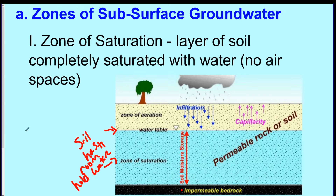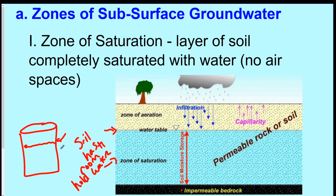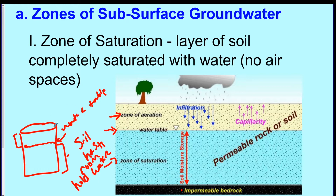Think of a glass of water — the line you fill the water up to in your glass would be considered the water table. The area that has the water is called the zone of saturation, and the area with no water, or air only, is called the zone of aeration. If you drink water from the glass, the water table goes down; if you add more water, it goes up. It's the same thing underground.